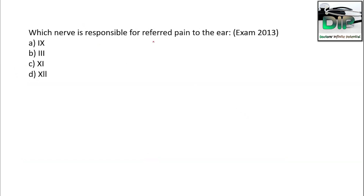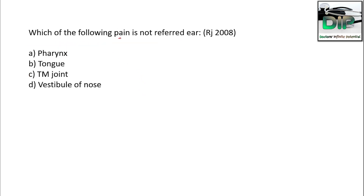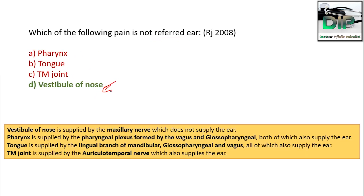Which nerve is responsible for referred pain to the ear — 9th, 3rd, 11th, or 12th? It is the 9th (glossopharyngeal). Referred pain to the ear can come from: pharynx (yes), tongue (yes), temporomandibular joint (yes), vestibule of the nose (no) — the vestibule is supplied by the maxillary nerve, which doesn't supply the ear.